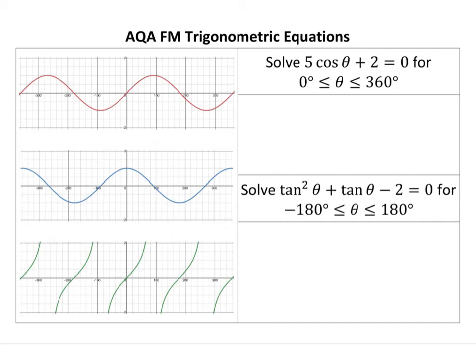Okay, so we're looking at trig equations here, and I've drawn three graphs. The first one is y equals sine x. The second one, y equals cosine of x. And the third one, in green, y equals tan of x.